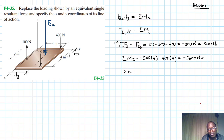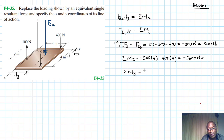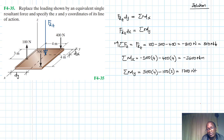For the summation of moments about the y-axis, only the 100 N and 500 N forces participate — 400 does not contribute. The 500 N force gives a positive moment and the 100 N force gives a negative moment. So we have 500 times 4 minus 100 times 3, which equals 2000 minus 300, giving 1700 Newton-meters.